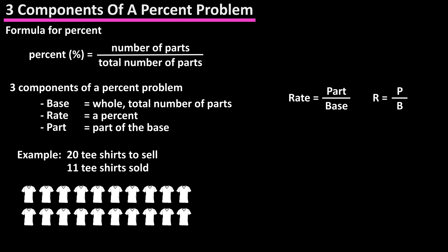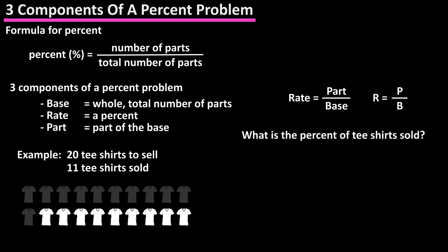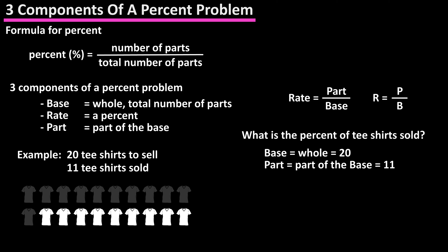For example, let's say that you have 20 t-shirts to sell and you sell 11 of them. What is the percent of t-shirts sold? The base would be the whole or total number of parts, which is 20 t-shirts. The part would be part of the base — in this case the 11 t-shirts you sold out of the total number of t-shirts, 20. And the rate would be the percentage of t-shirts sold.